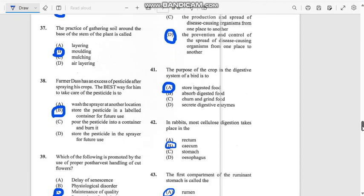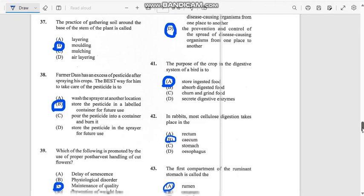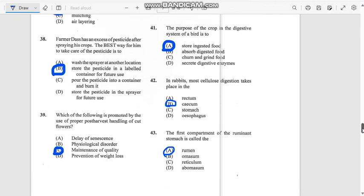Number 41: The purpose of the crop in the digestive system of a bird is to store ingested food. If it was about pebbles, it would have to do with grinding food.